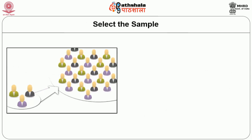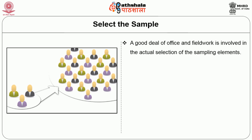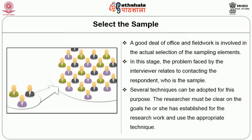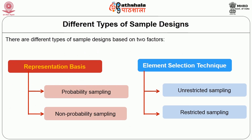The final step is to select the sample. This is the final step in the sampling process. A good deal of office and field work is involved in the actual selection of sampling elements. The problem faced by the interviewer relates to contacting the respondent who is the sample. Several techniques can be adopted for this purpose, and the researcher must be clear on the goals established for the research work and use the appropriate technique.